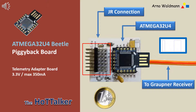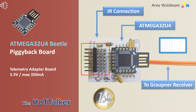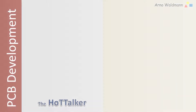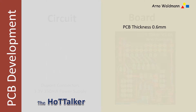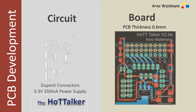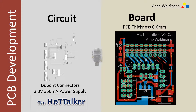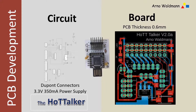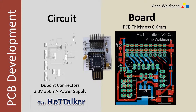The microcontroller can work in 5V mode for USB programming and in 3.3V to communicate with Graupner receivers. The PCB board development and design for the Hot Talker was very simple, as it only had to meet two requirements: firstly, a low noise 3.3V power supply, and secondly, a connection system that is suitable for both the microcontroller and the components to be connected.